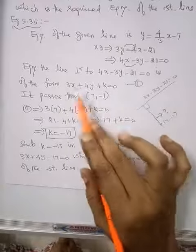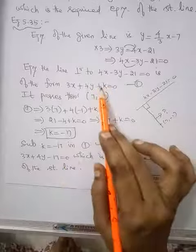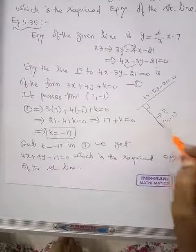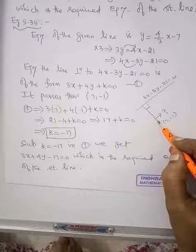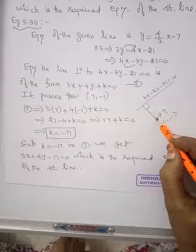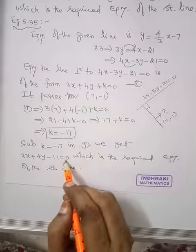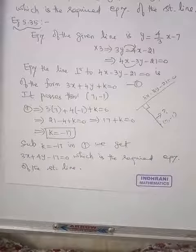Substitute k equal to minus 17 in equation number 1. We get 3x plus 4y minus 17 equal to 0, which is the required equation of the straight line. This line's equation is 3x plus 4y minus 17 equal to 0. Okay, thank you.